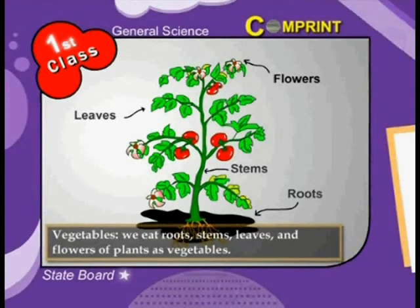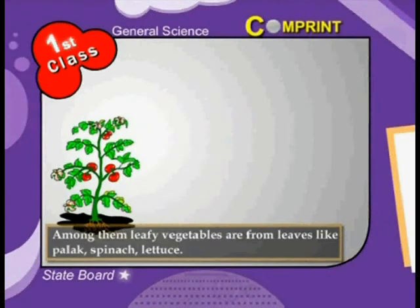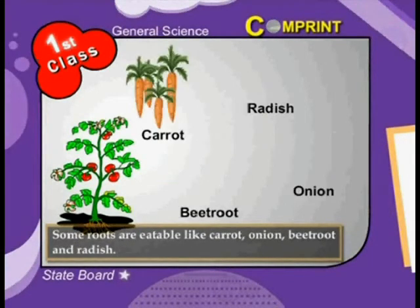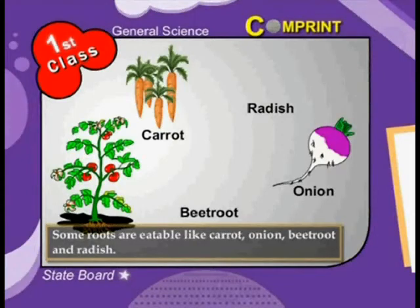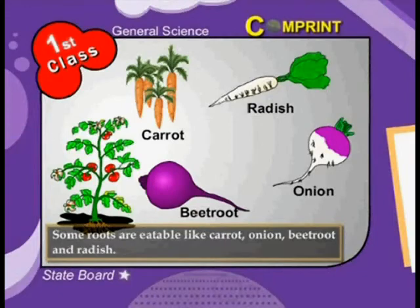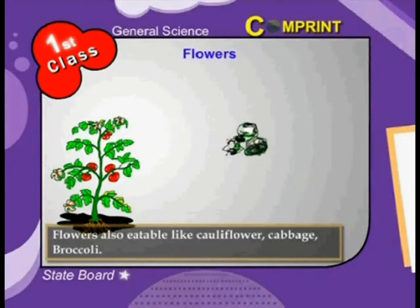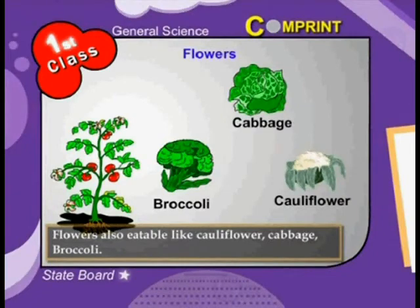Vegetables: we eat the roots, stems, leaves, and flowers of plants as vegetables. Leafy vegetables come from leaves, like palak, spinach, and lettuce. Some roots are edible, like carrot, onion, beetroot, and radish. Stem vegetables include potato, ginger, and so on.